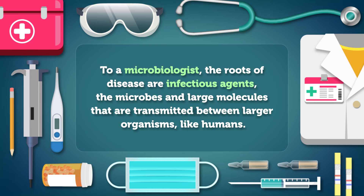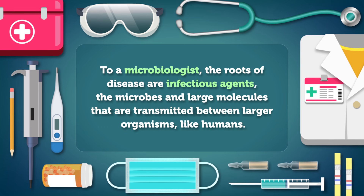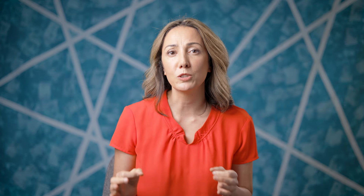In our last episode, we saw how looking at infectious diseases from a microbiology perspective can help us understand and tackle outbreaks better. To a microbiologist, the roots of disease are infectious agents — the microbes and large molecules that are transmitted between larger organisms like humans. To be more specific, it all starts with pathogens, which is what we call the specific infectious agents that can make us sick.